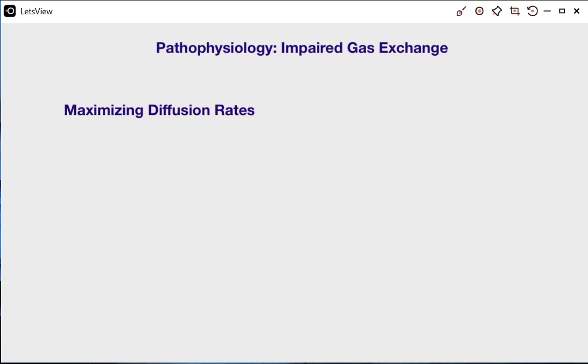The past few lectures have looked at gas exchange between the alveoli and the pulmonary capillaries or the blood. Here we're going to build on that knowledge and take a look at some diseases and disorders where that gas exchange is impaired and therefore we're not able to fully oxygenate our blood.